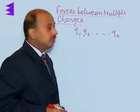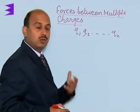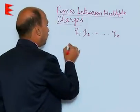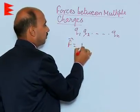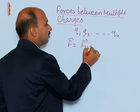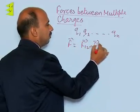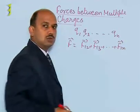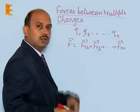Then the total force acting on any one of the charge, suppose Q1 we are taking. So we can write here F is equal to F12 plus F13 plus F1n, so total force on the charge Q1.